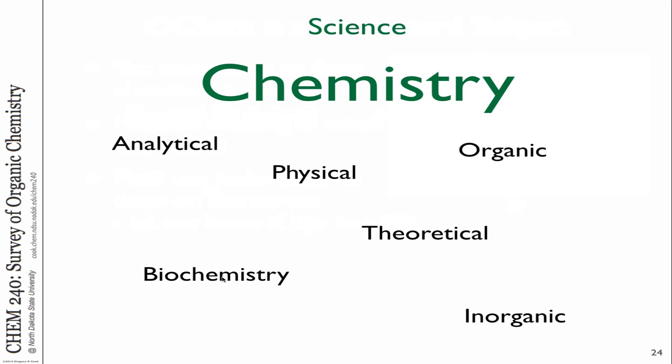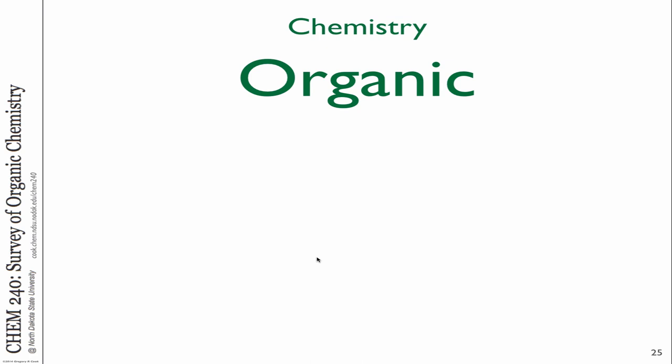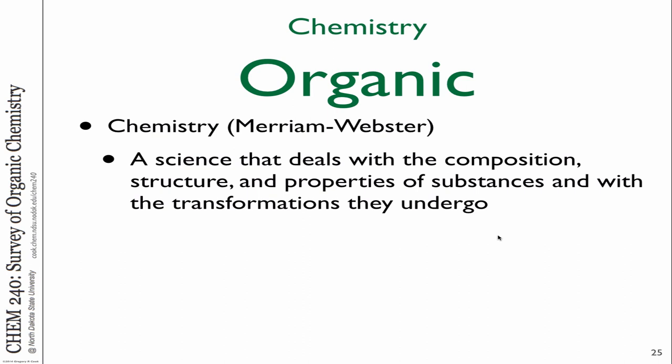In chemistry, we divide up chemistry into various different types: physical chemistry, theoretical or computational chemistry, biochemistry, organic chemistry. They all have their own different features, but they are all about molecule structures and reactions to some sense. If you look up the definition of chemistry, it's a science that deals with the composition, structure, and properties of substances, and the transformations that they undergo. That's the real key thing about chemistry.